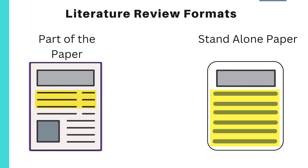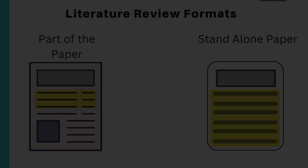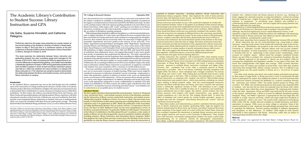A literature review can be part of a research paper, typically after the introduction and before the methods section, giving background on the topic-specific literature that has influenced the study. It can also be an entire review paper that is a more extensive review of literature on a specific topic with specific parameters — so it can be a small part of a paper or the whole paper itself.